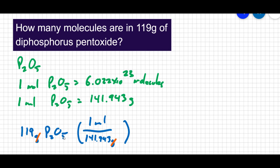But the question is asking for molecules. So I'm going to take the second bit of information. There are Avogadro's number of molecules for every one mole. I can cancel out my moles and now I'm left in molecules.